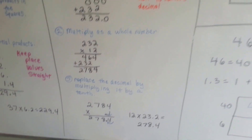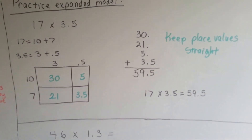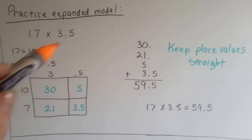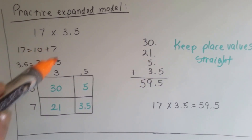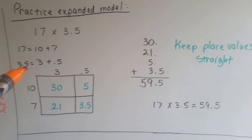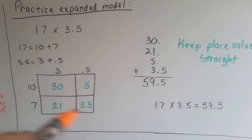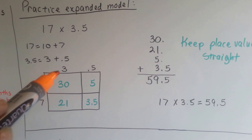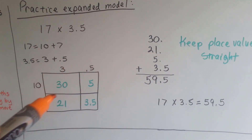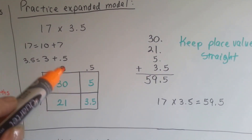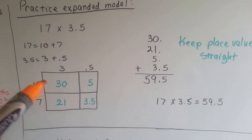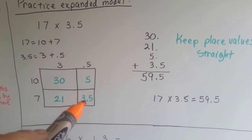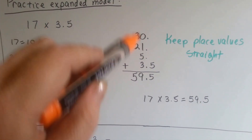Let's try the expanded model one more time. 17 times 3 and 5 tenths. We open the 17 up to 10 plus 7, and we open the 3 and 5 tenths up as 3 plus 5 tenths. We draw our square and make our boxes. We put our 10 and 7 from the 17, and our 3 and 5 tenths on top. Then we multiply them: 10 times 3 is 10, 7 times 3 is 21, 10 times 5 tenths is 5, and 7 times 5 tenths is 3 and 5 tenths.